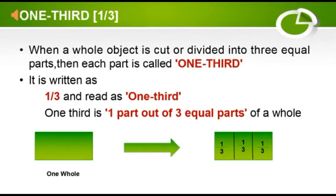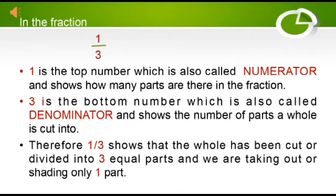As you can see in the figure, a whole rectangle has been cut or divided into three equal parts. Each part is called one third, or one by three. It is written as one by three and read as one third. One third means one part out of three equal parts of a whole.